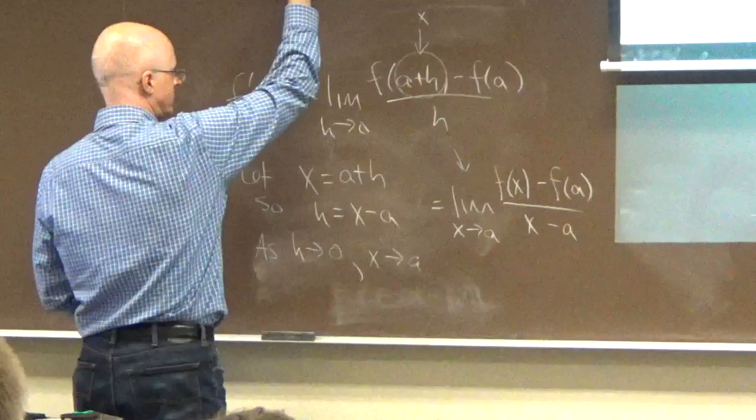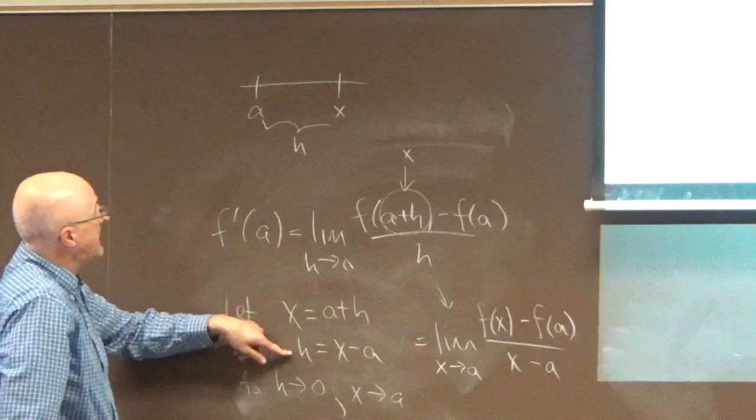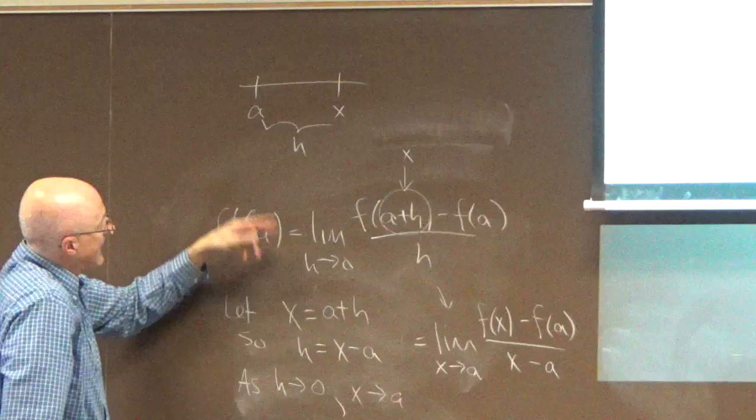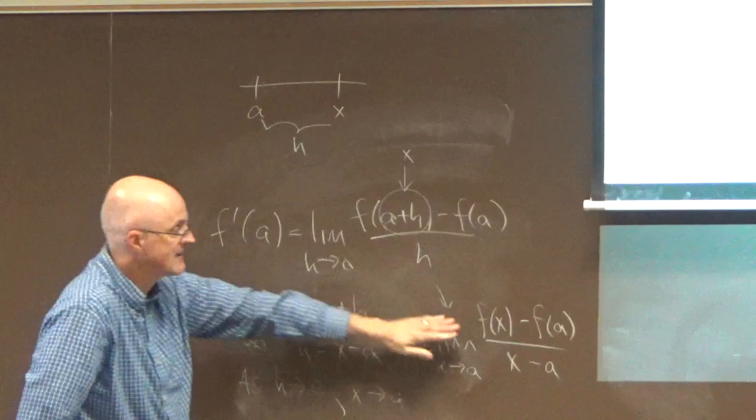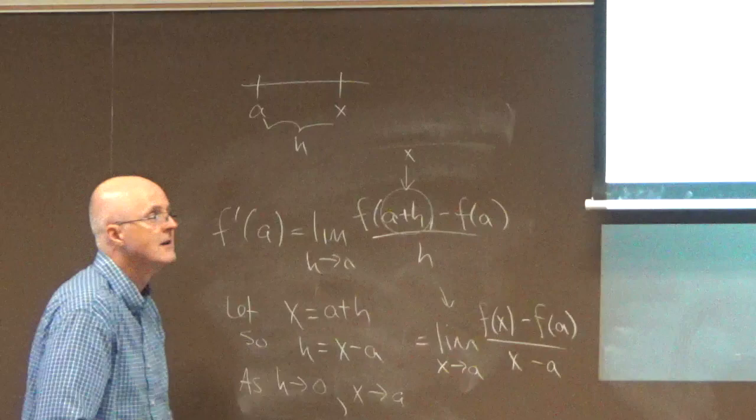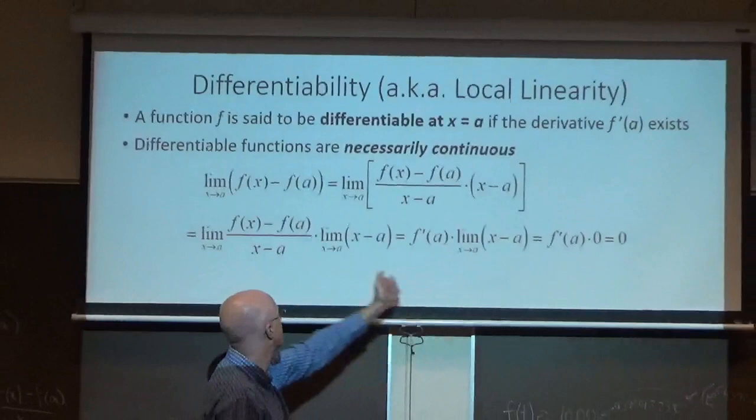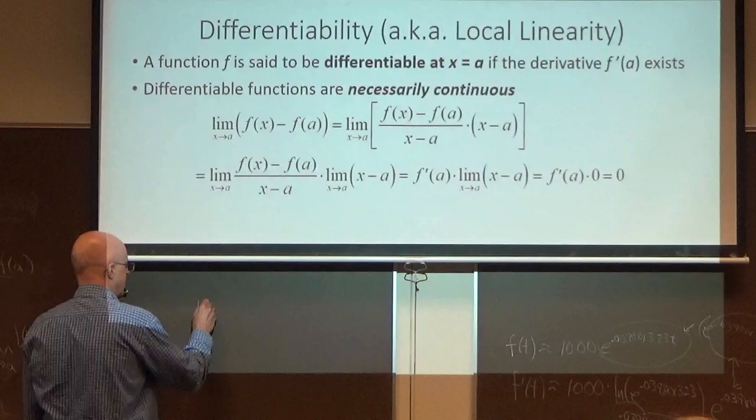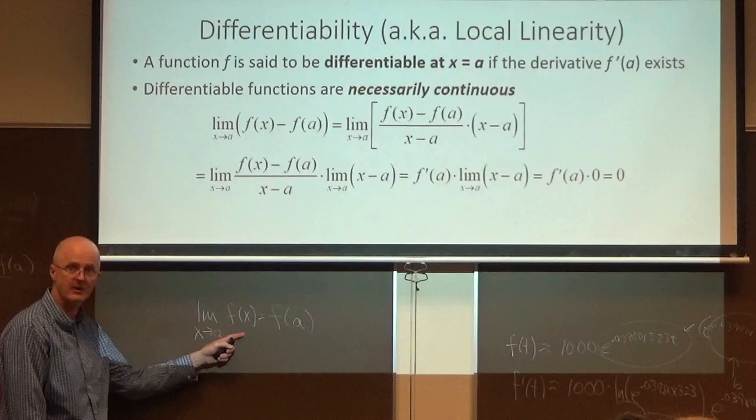Look at this equation here. If h is going to zero, that means x minus a is going to zero, x must be approaching a. In a picture on another line, really a is here, x is here, and h is here. There's a visual for why h equals x minus a. As h goes to zero, that's equivalent to x going to a. This is a slope of a secant line right there. Its limit as x goes to a is the slope of a tangent. But this limit is zero, so zero times f prime of a is zero.